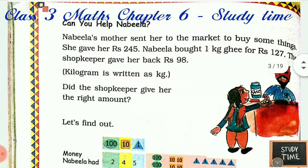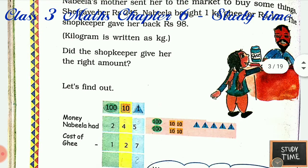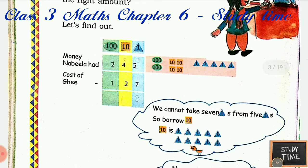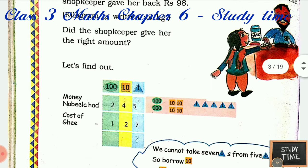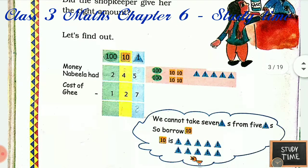Can you help Nabila? Nabila's mother sent her to the market to buy something. She gave her rupees 245. Nabila bought 1 kg ghee for rupees 127. The shopkeeper gave her back rupees 98. Did the shopkeeper give her the right amount? You have to find whether the shopkeeper has given her the right amount of money.